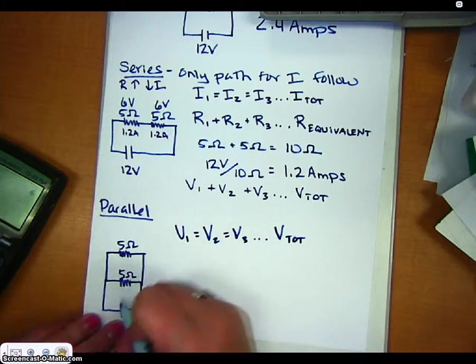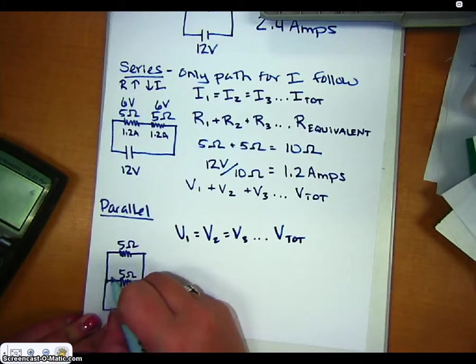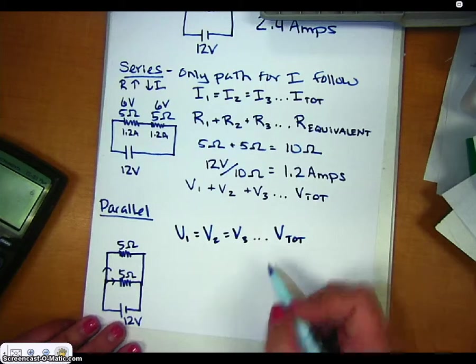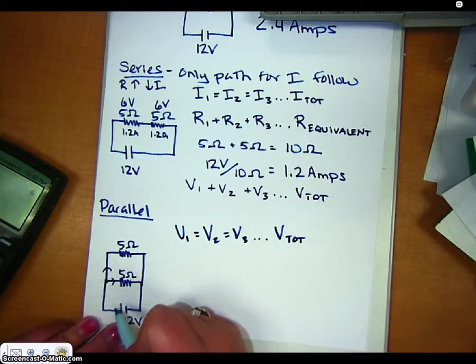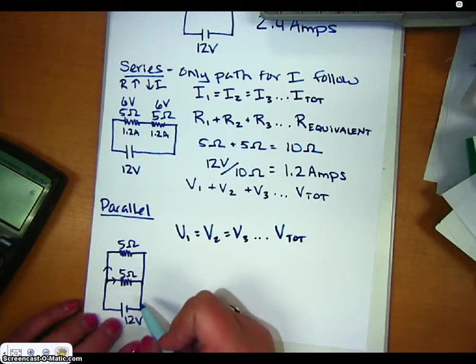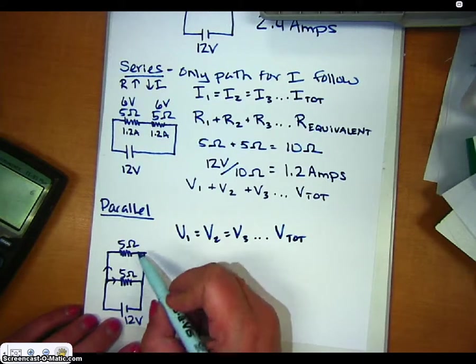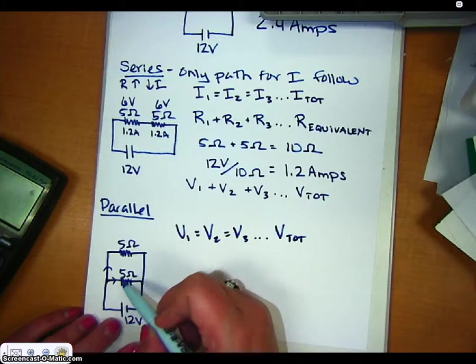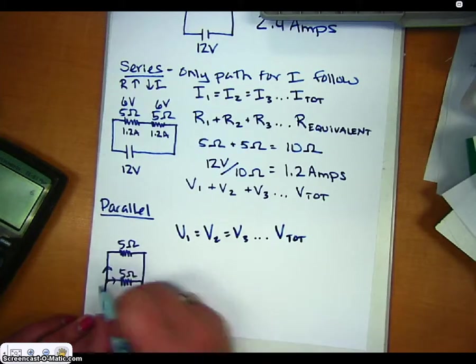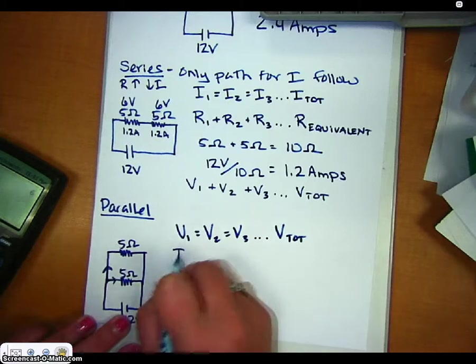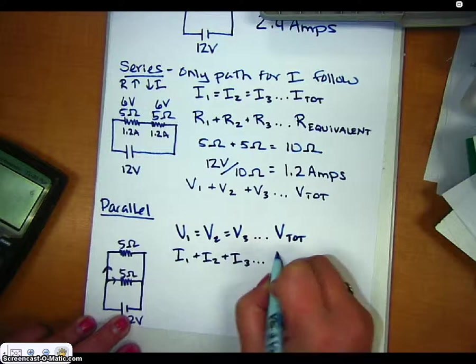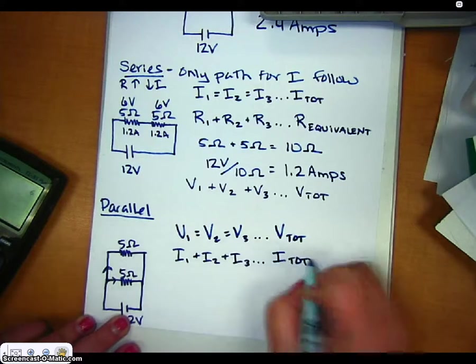Now the current, as it comes around, it can split right here. And I'm sure you've heard the term follows the path of least resistance. This is where that comes from, is using a circuit. More current is going to go to the path where there's least resistance. Well, in this instance, we've got the same resistance, so it would share them equally. But the fact is, is that the total current is going to split at this location, and some is going to go here, and some is going to go here. So we say that the current at every location of a resistor has to add to the total current.